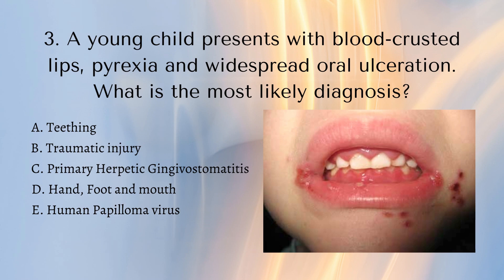Number three: a young child presents with blood-crusted lips, pyrexia and widespread oral ulceration — what is the most likely diagnosis? Is it teething, a traumatic injury, primary herpetic gingivostomatitis, hand foot and mouth, or human papillomavirus? Teething is unlikely since most teeth are already present and wouldn't give that kind of presentation. Traumatic injury is a reasonable answer but the child likely wouldn't present with pyrexia. Hand, foot and mouth would probably mention something on the palms in the question, and human papillomavirus wouldn't present like this. The answer is C — primary herpetic gingivostomatitis.